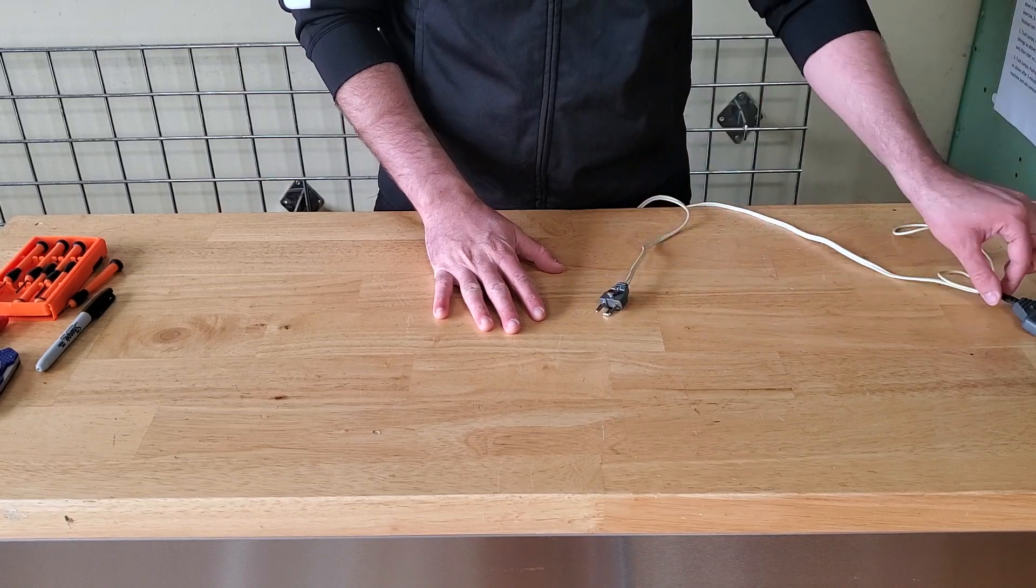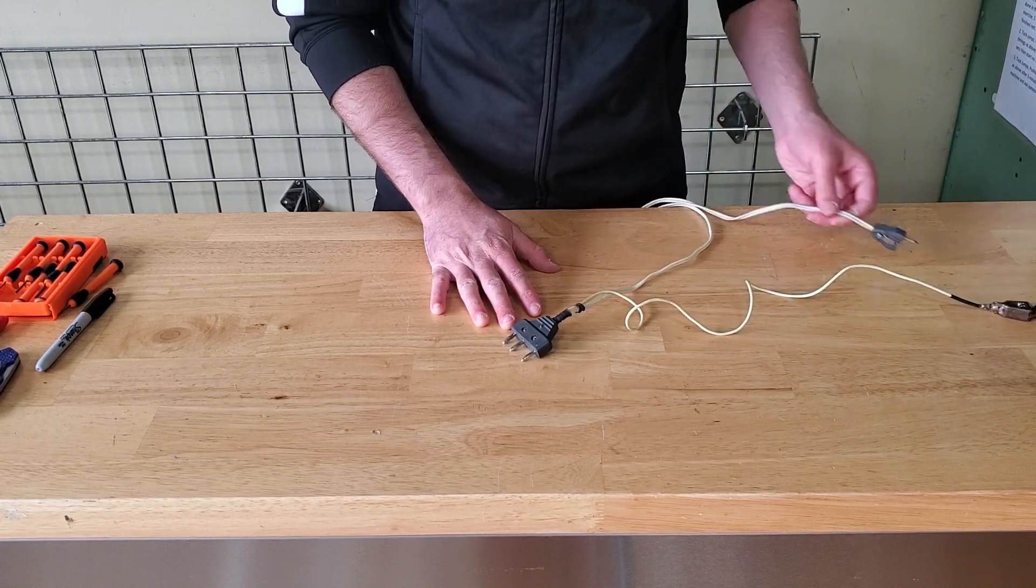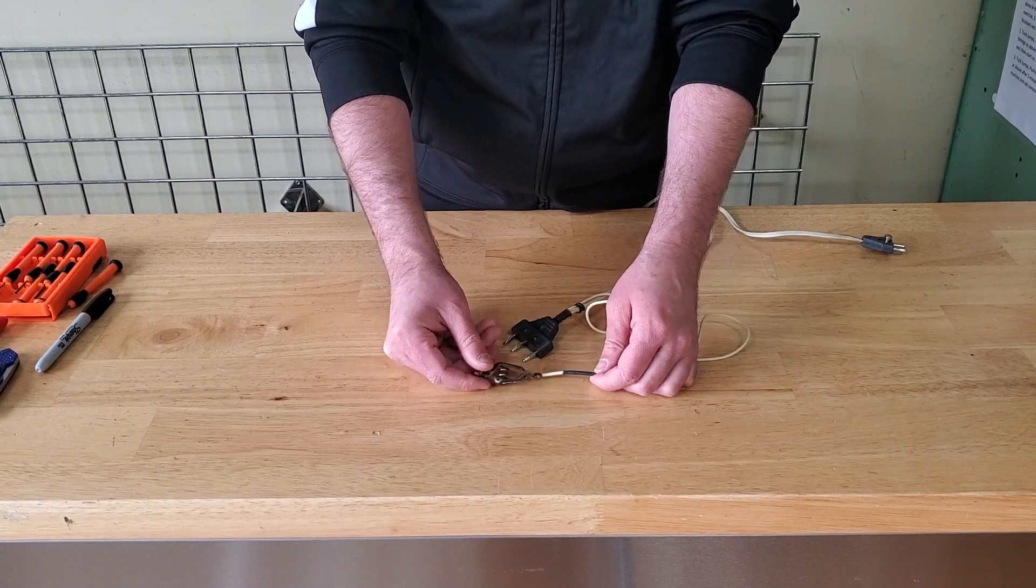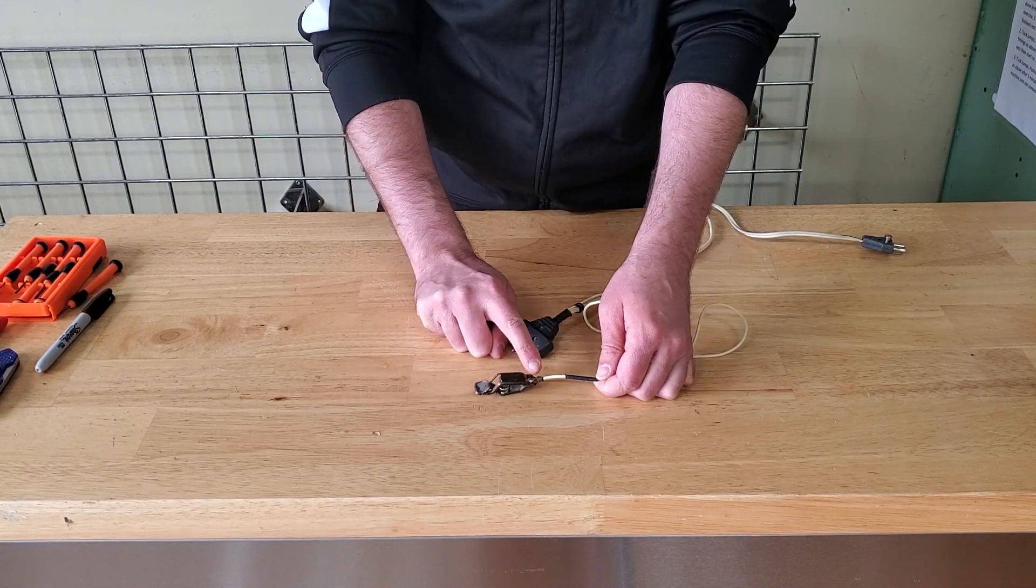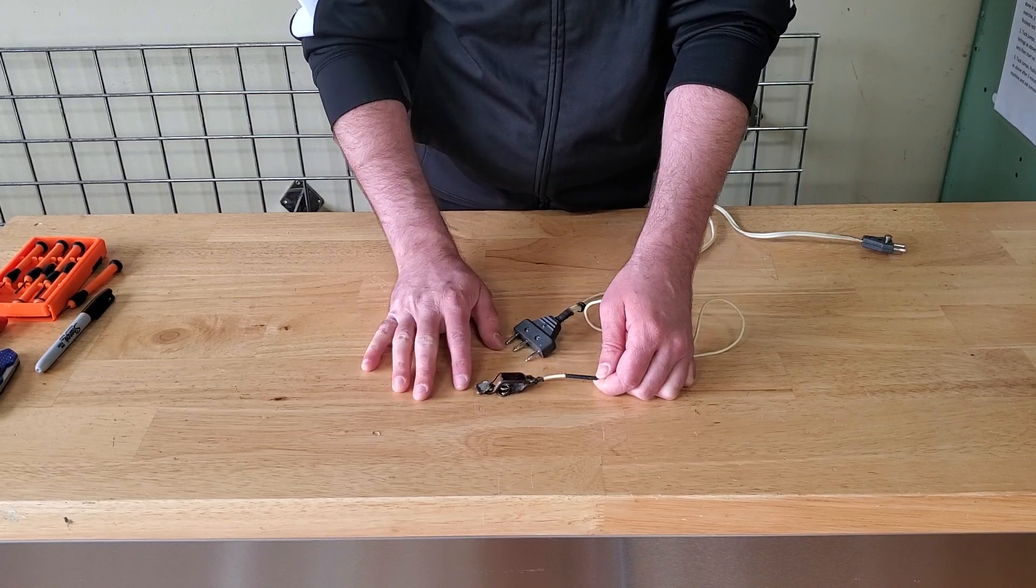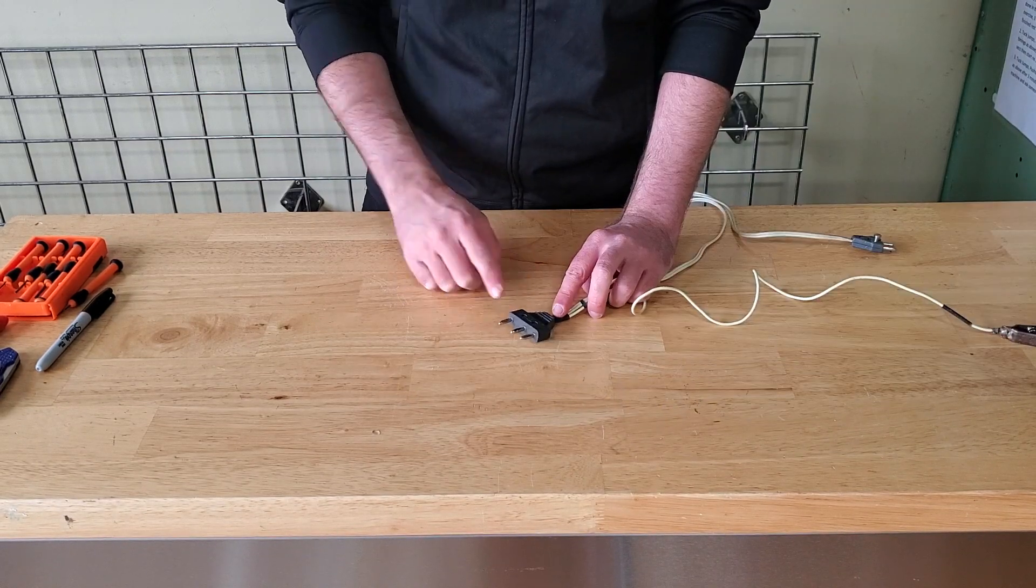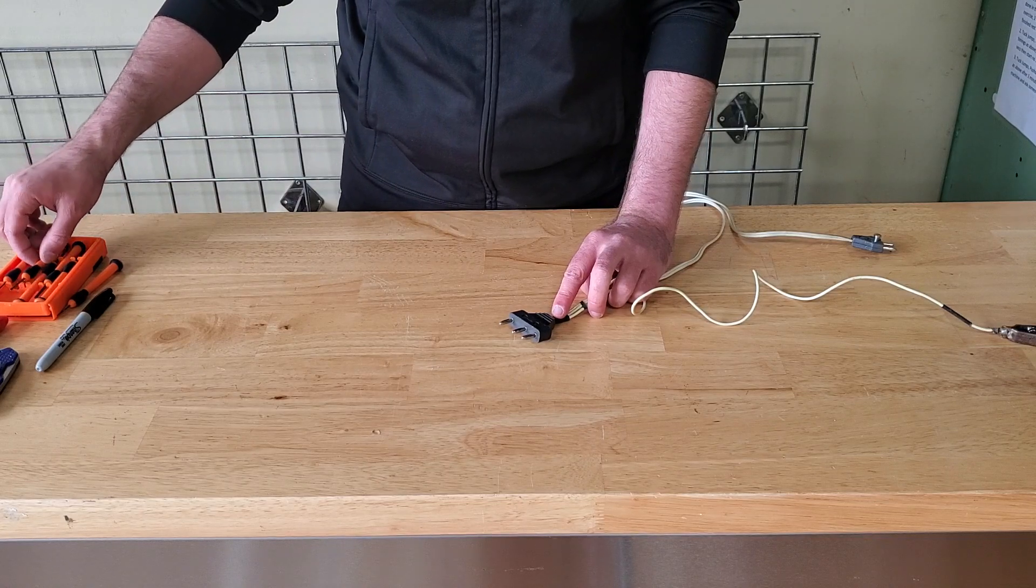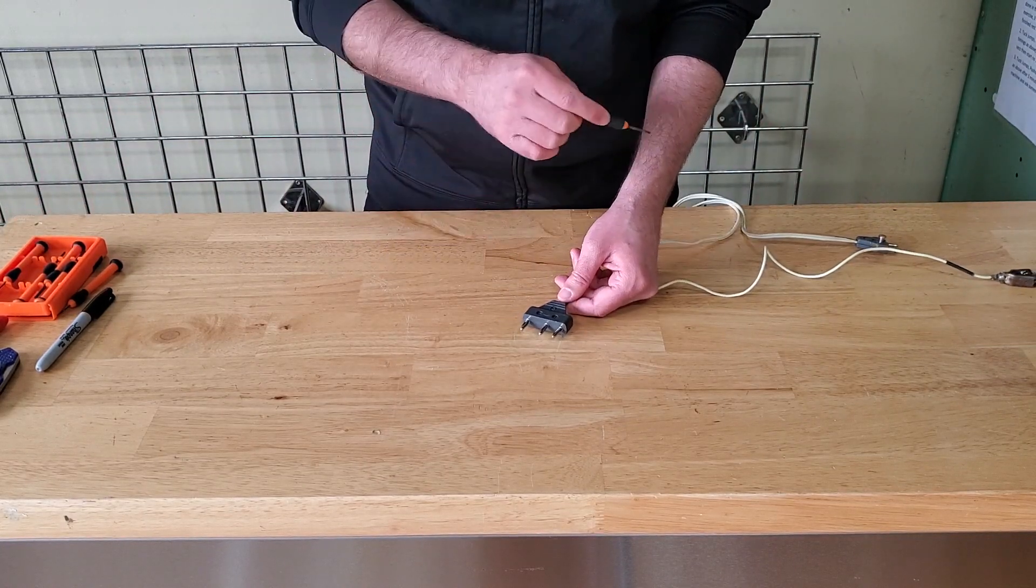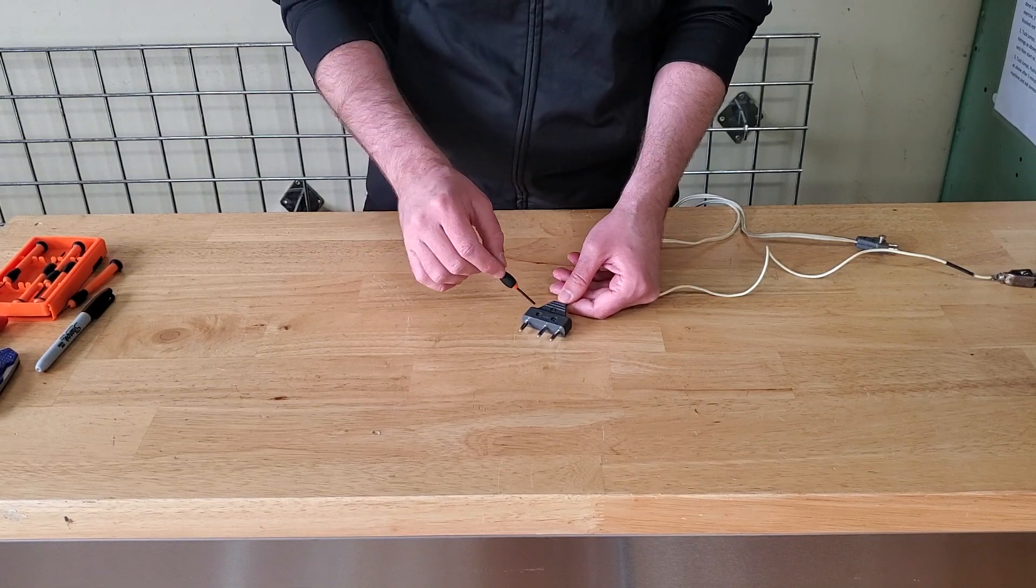Now we're going to talk about the three prong end. We won't be talking about the alligator clip today. If you have a soldering iron, you can simply re-solder that back on. Pretty easy to do. Talking about this three prong end, it is very similar to repairing our two prong end. We just have another line to work with.